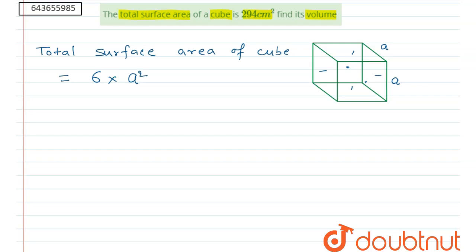And this value is given as 294 cm², so we can write it as 6a² = 294 cm².